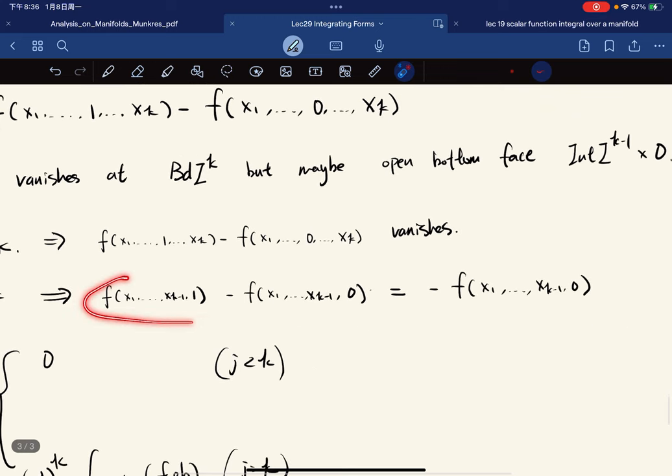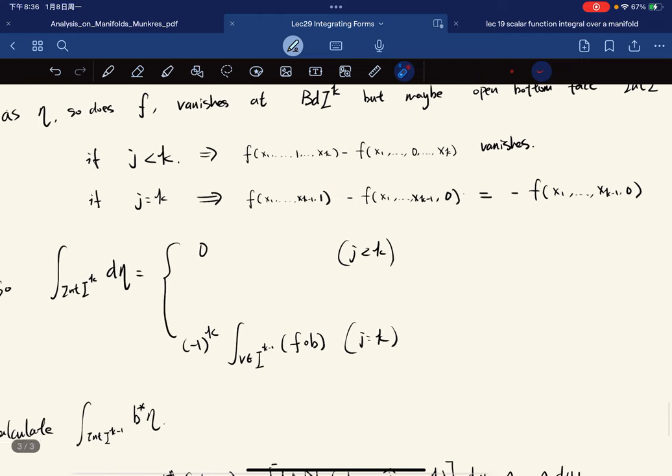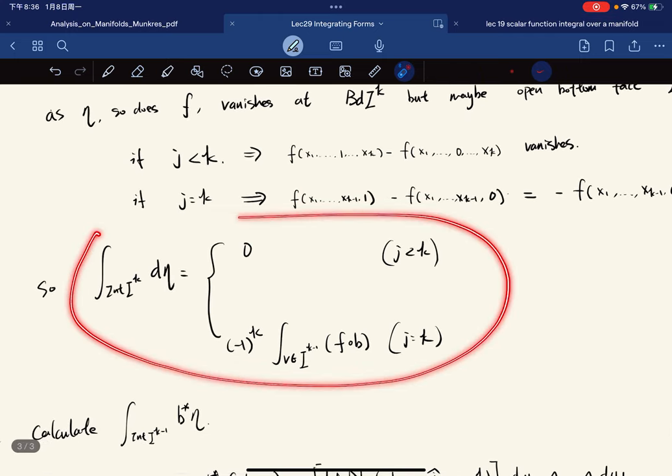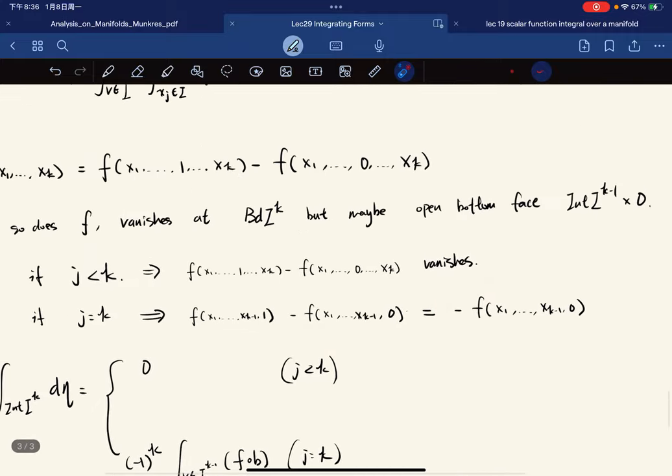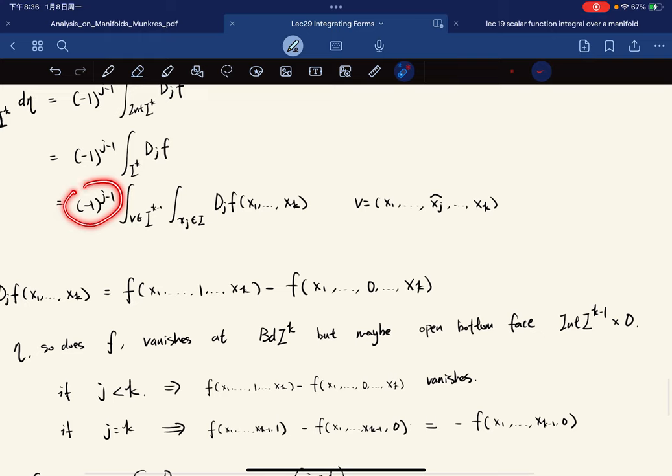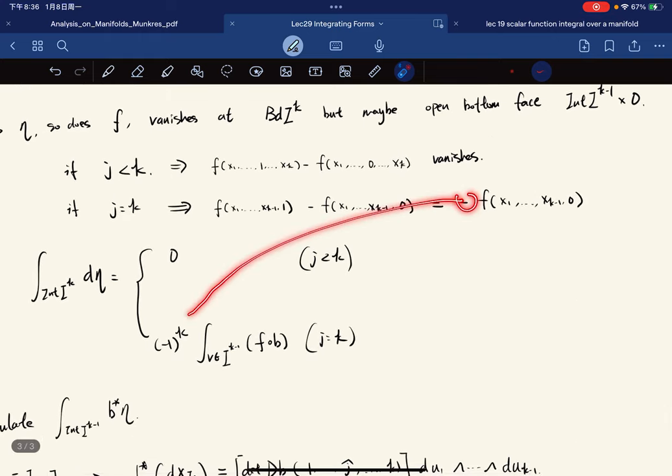With that being said, if j is less than k then this vanishes. If j equals k then we have this. This vanishes, so this equals this. We have (-1)^(k-1), and we bring this negative out, so this is (-1)^k. The inside is going to look like this, where b is the map we said, equal to this.